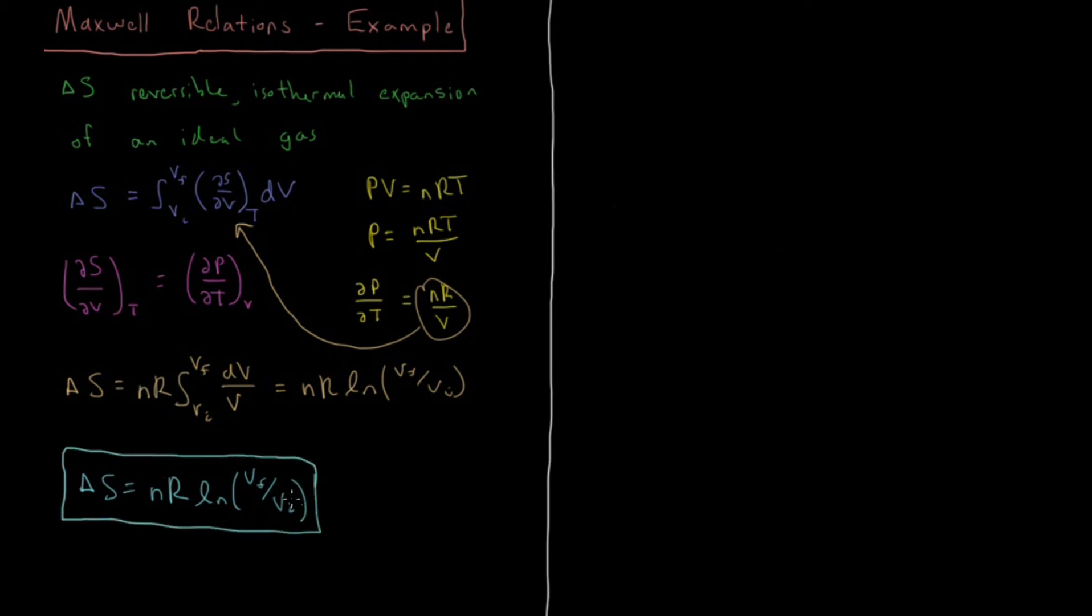And this is the exact same result we got from calculating the heat which was input into the system during this expansion and dividing that by temperature for our Clausius definition of entropy, where delta S equals the heat divided by temperature for an isothermal process.